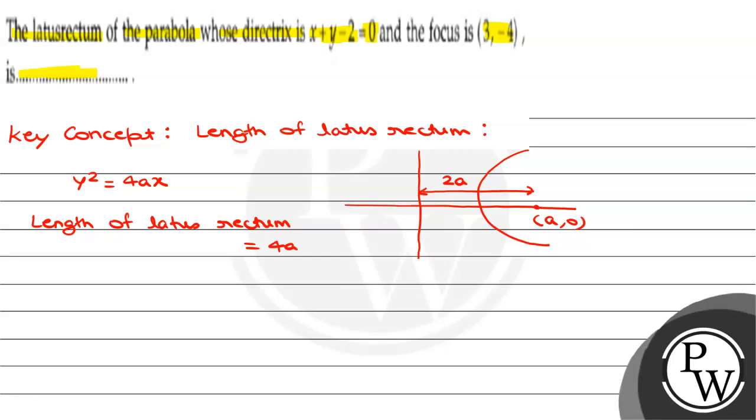Now, let's come to our equation. In this question, what is given? The equation of directrix. Equation of directrix. That is given as x plus y minus 2 equals 0.